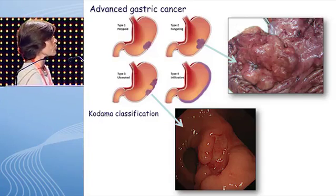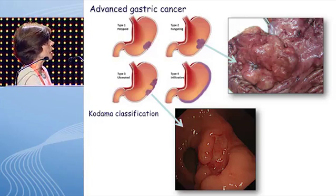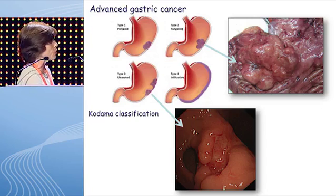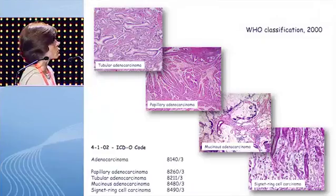This would be a protruding type, this a flat slightly elevated, and this an excavated type. Endoscopists often use chromoendoscopy for better characterization. We have a lot of experience in early gastric cancer at our hospital, where one of our endoscopists is an expert in endoscopic resection techniques. Unfortunately, in Portugal and many other countries including Spain, gastric cancer presents as advanced disease. This is the Codama classification of advanced gastric cancer, which distinguishes polyps (rare), fungating types (the large majority), excavated types, and widely infiltrative types corresponding to signet ring or diffuse carcinoma.